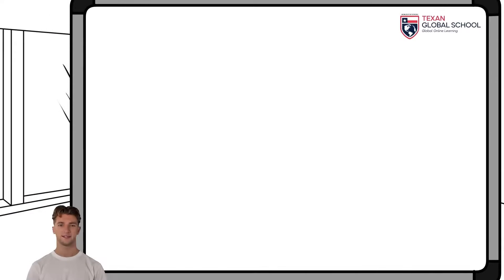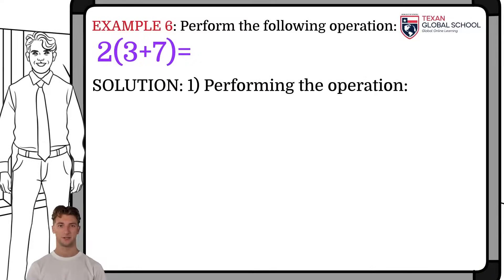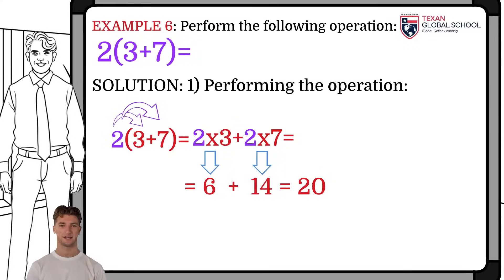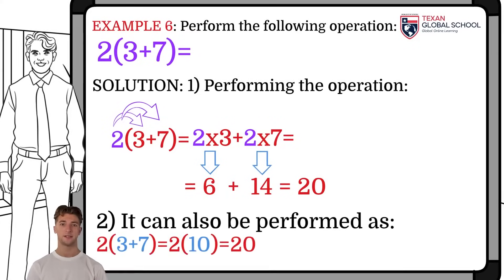Let's look at an example. If we perform the operation of two by the quantity three plus seven, we apply the distributive law since we have two numbers added which are multiplied by another. Then we multiply two by three and two by seven. Two times three is six, and two times seven is fourteen. Then we add those values, resulting in twenty. One way to verify this operation is by adding three plus seven and multiplying the result by two. We can see that we obtain exactly the same result.